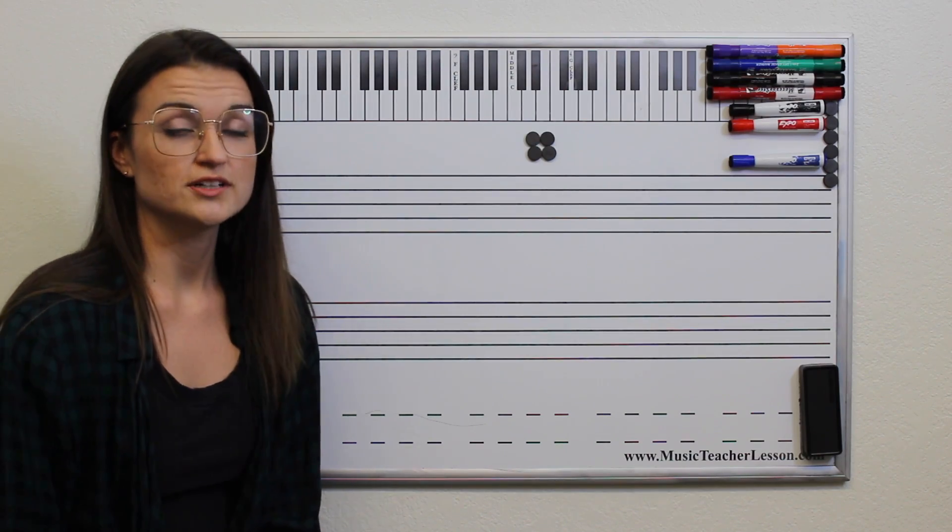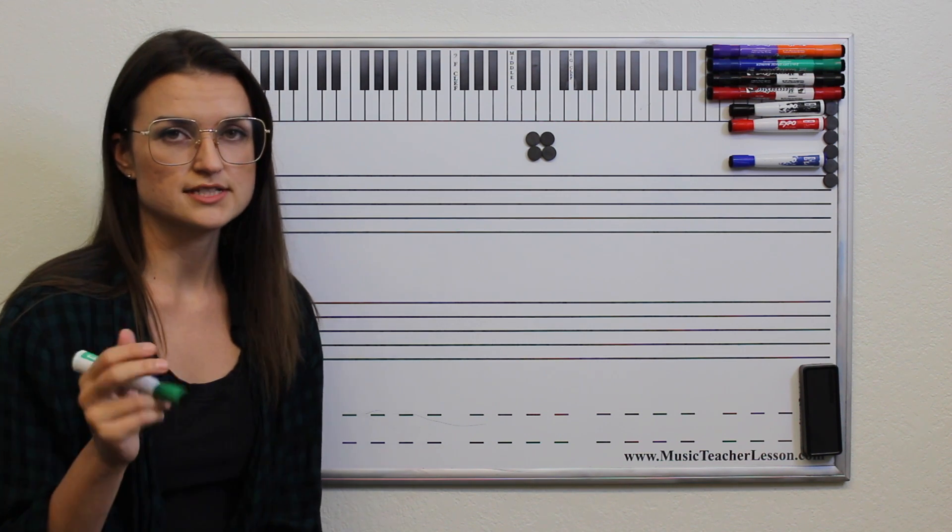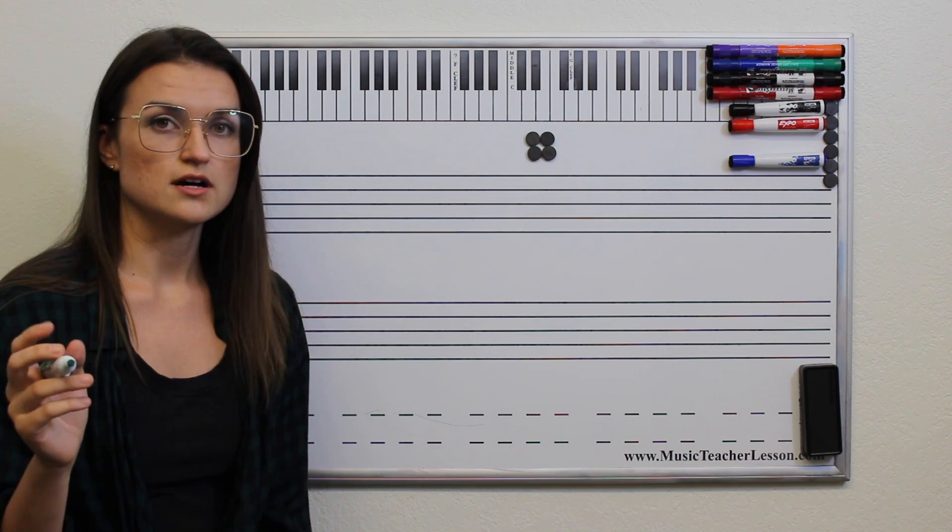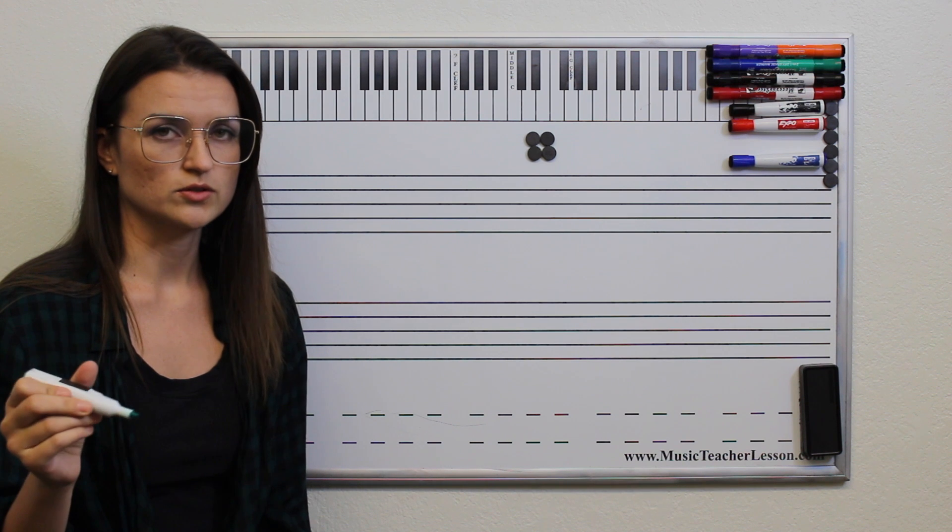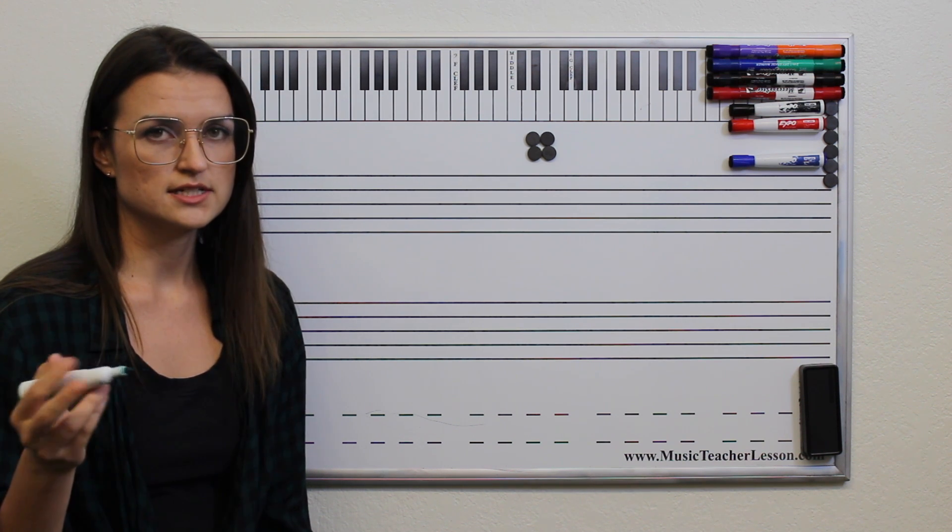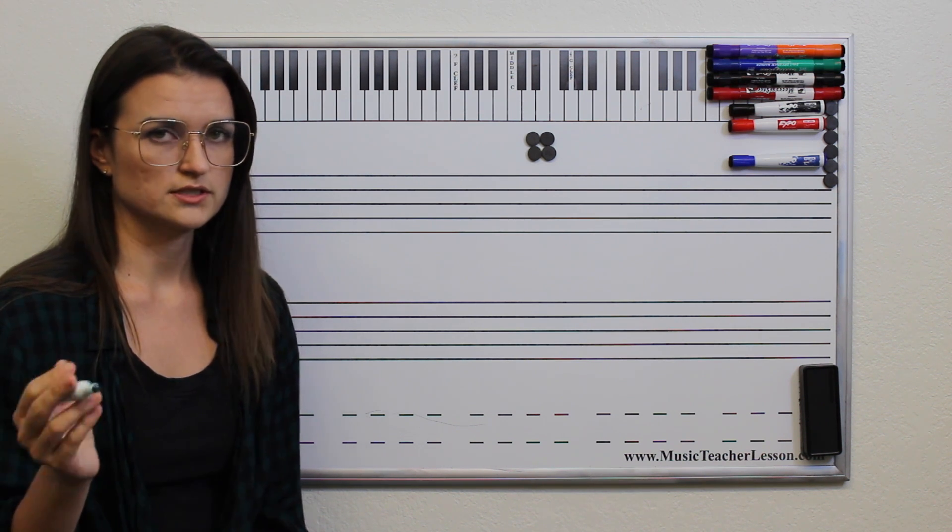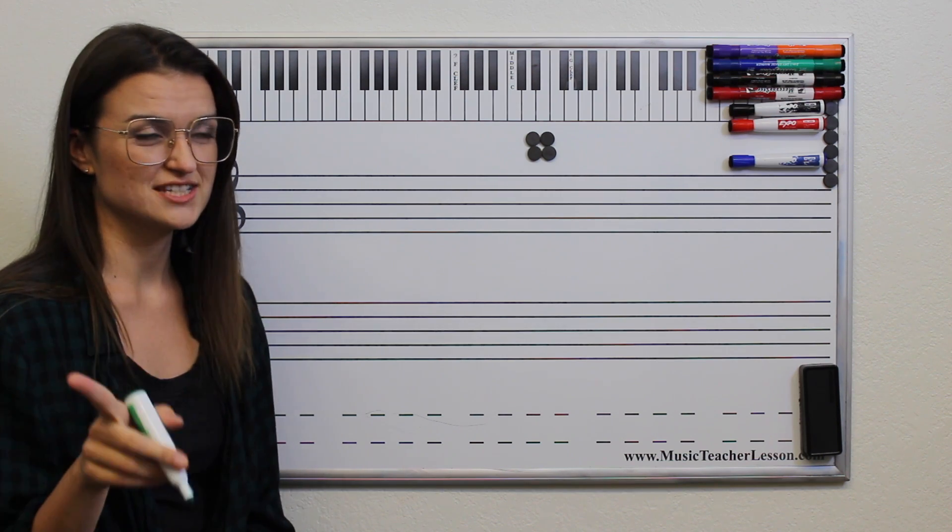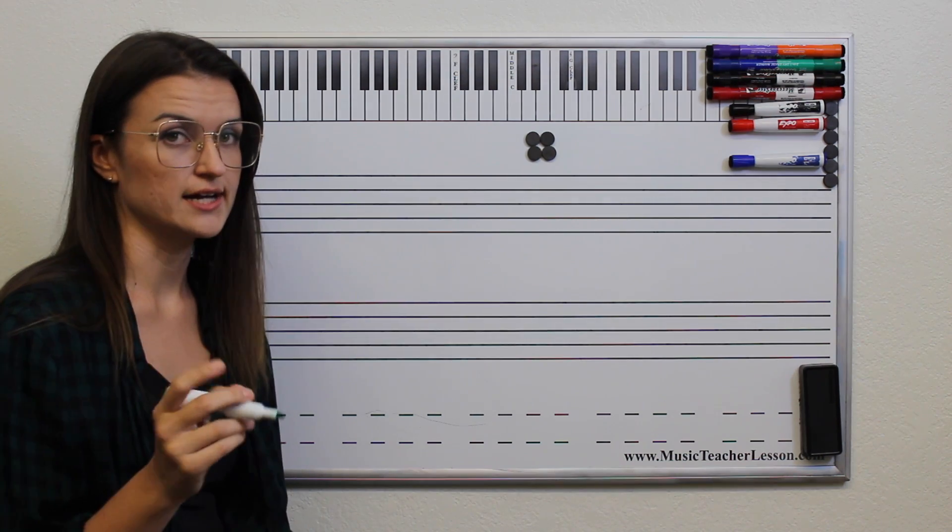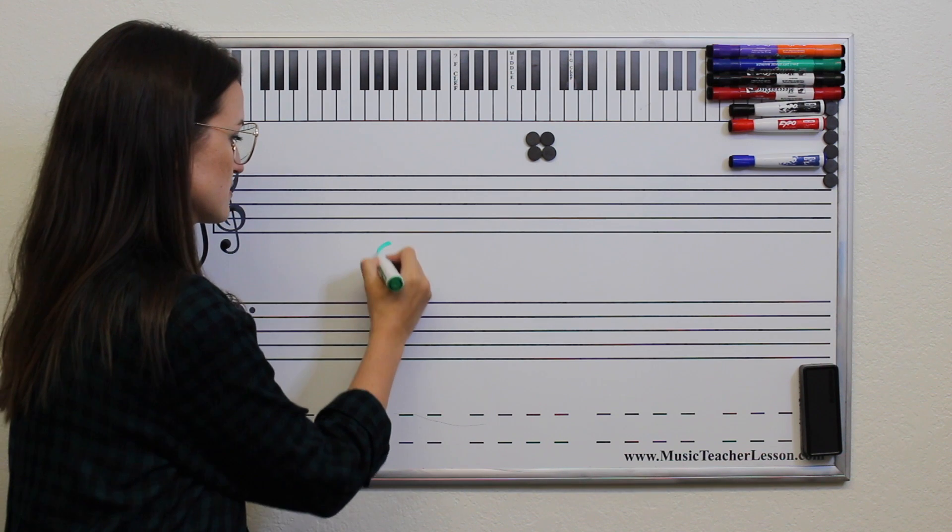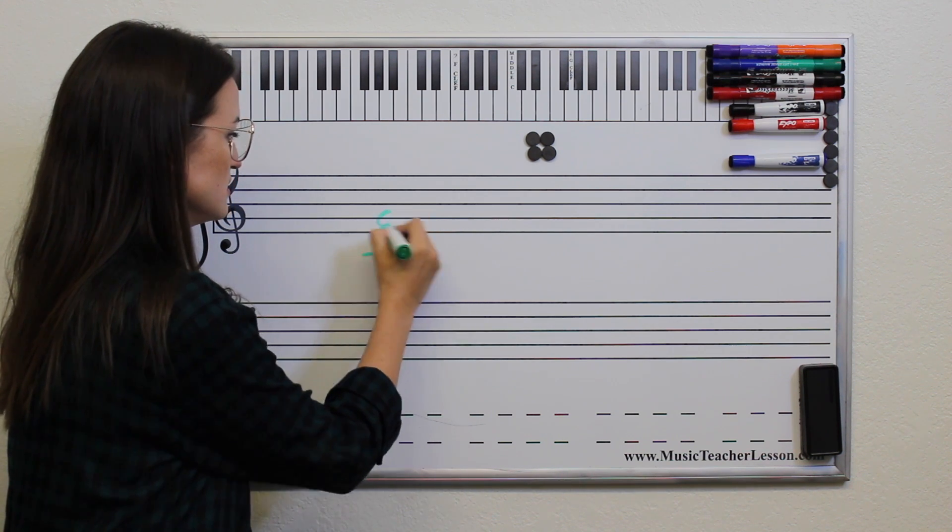So like I said in my intro, we are going to be talking about 5 different 7th chords. The first one we're going to talk about is a major 7th chord. So I'm just going to be starting on C for all of these 7th chords. So let's go over a major 7th. First we build a major triad, so C major looks like this, C, E, G.